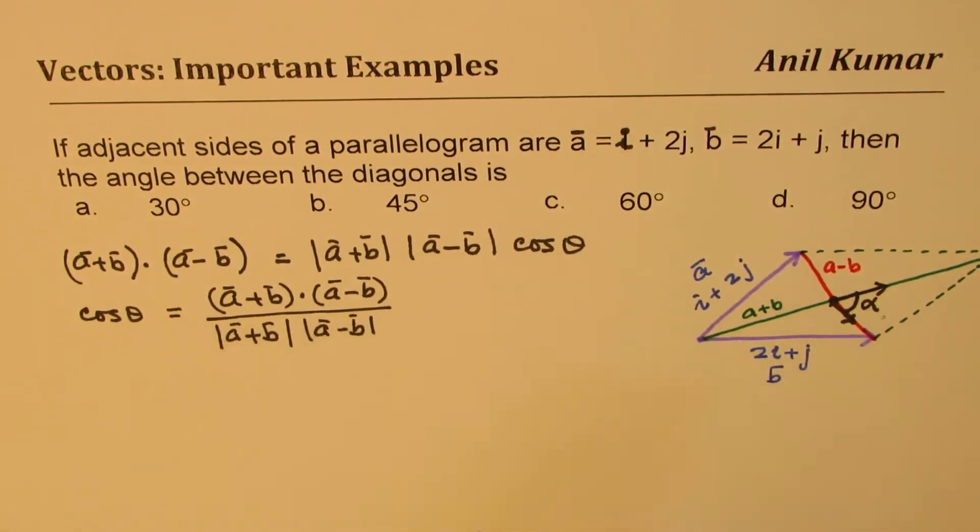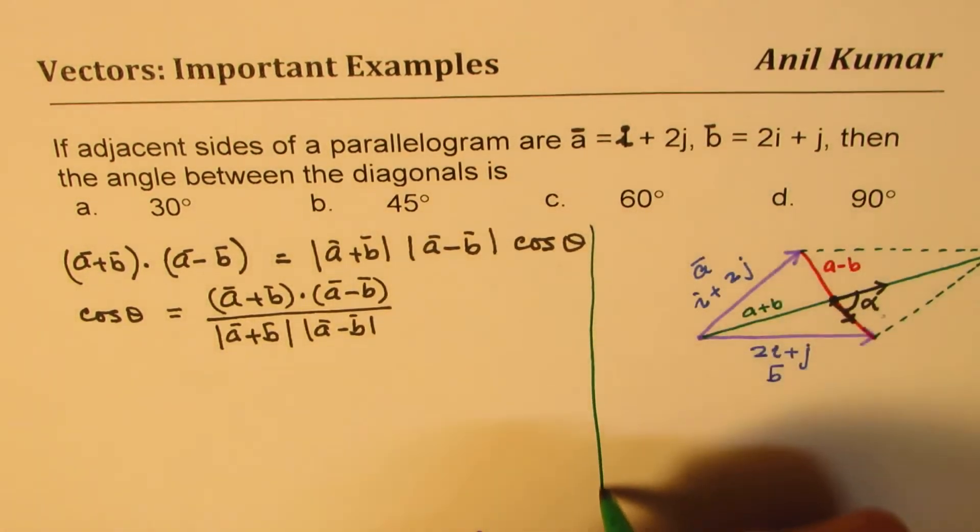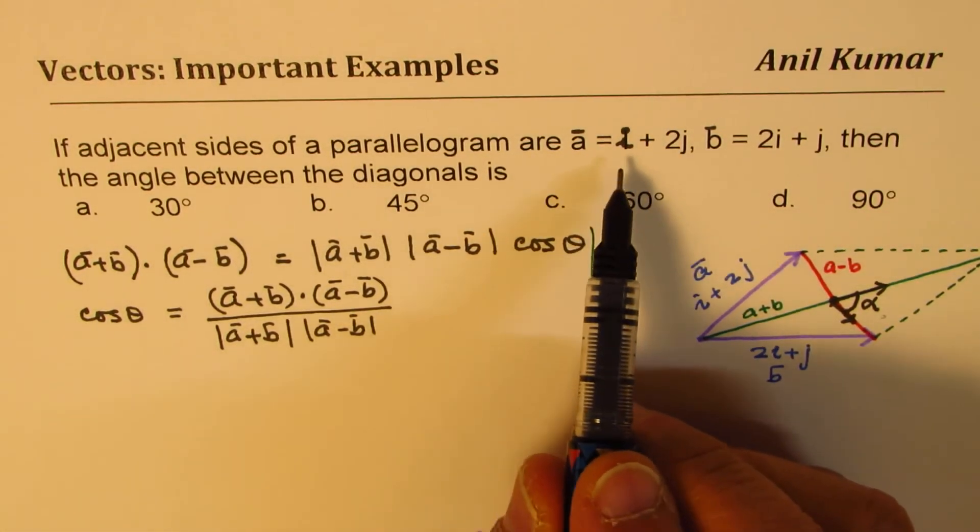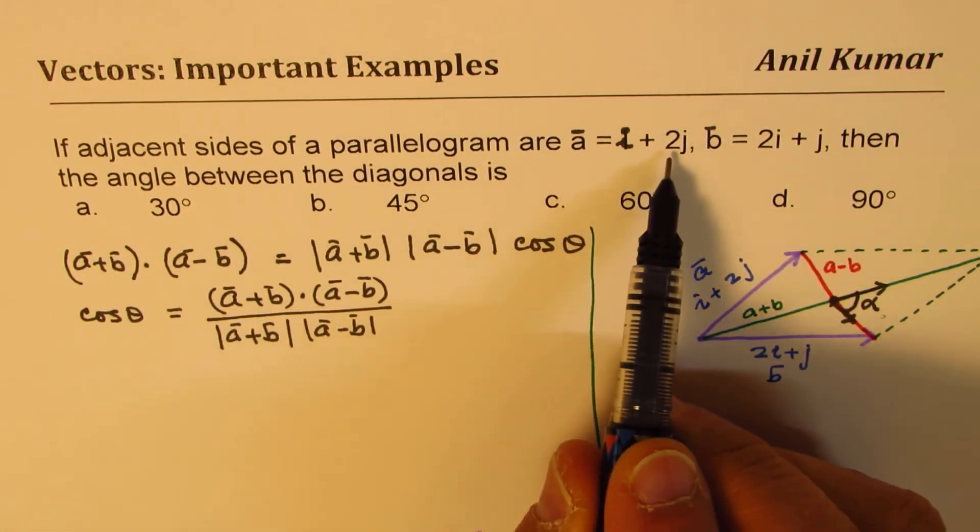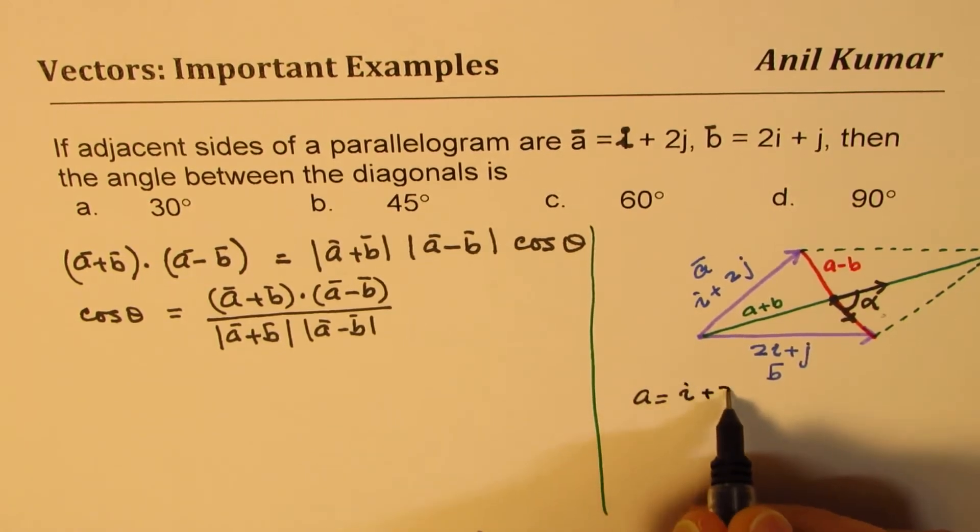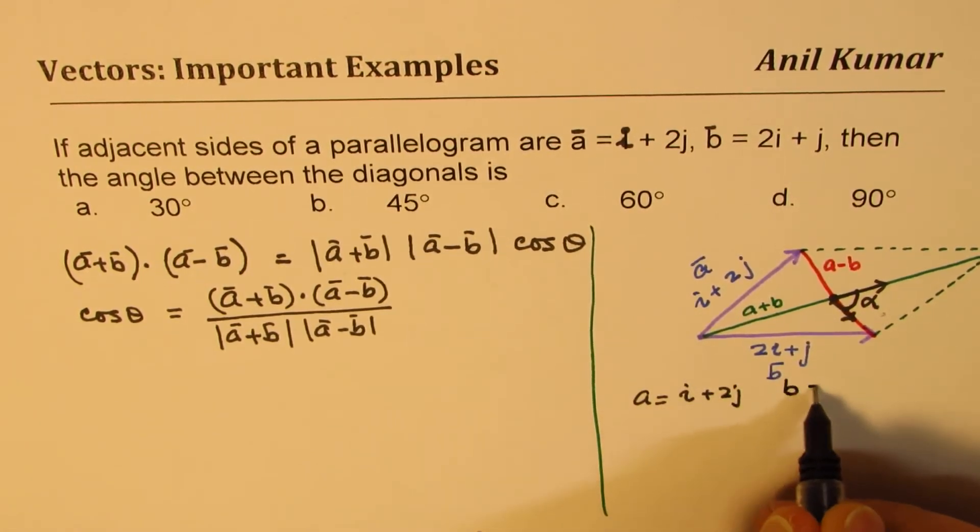We know vector a is i + 2j, so we know a equals i + 2j, and b equals 2i + j.